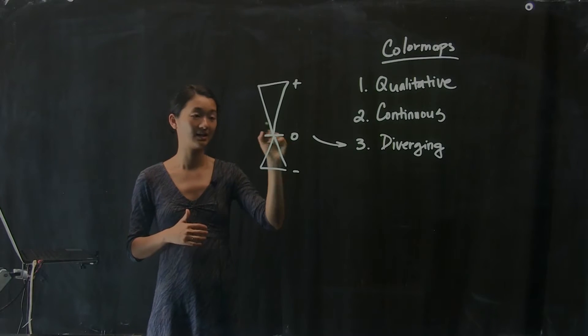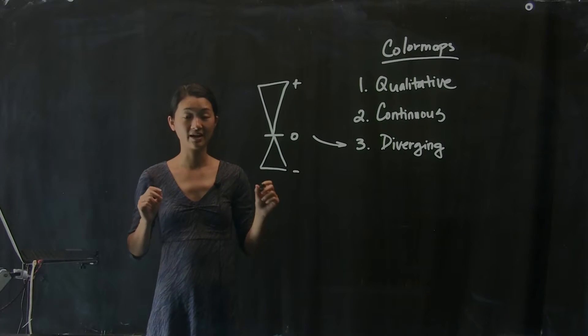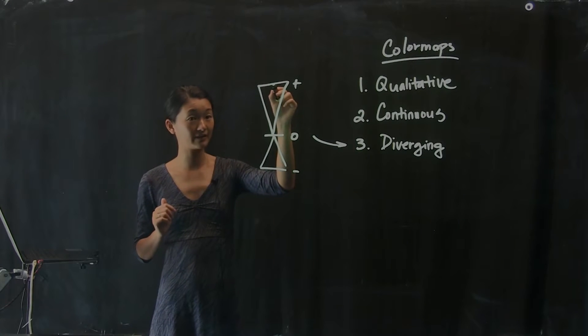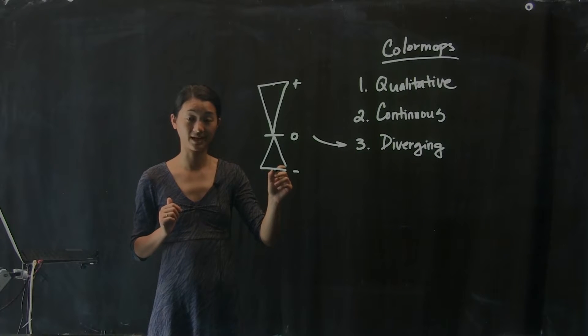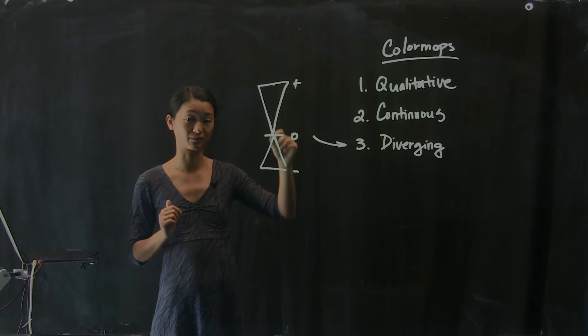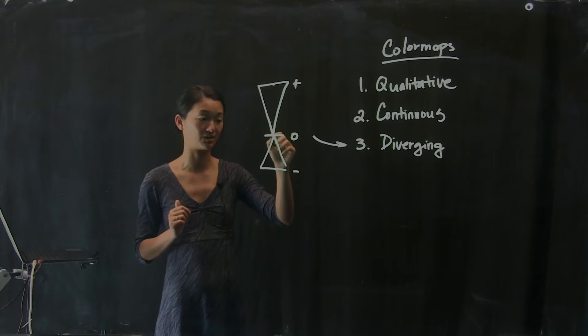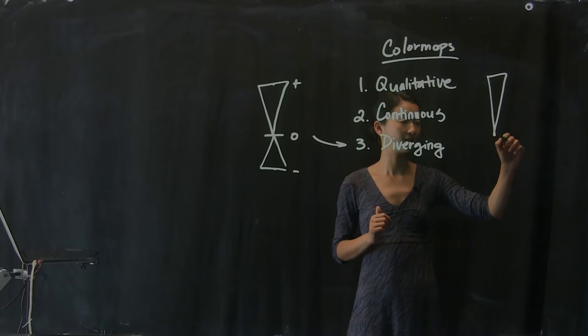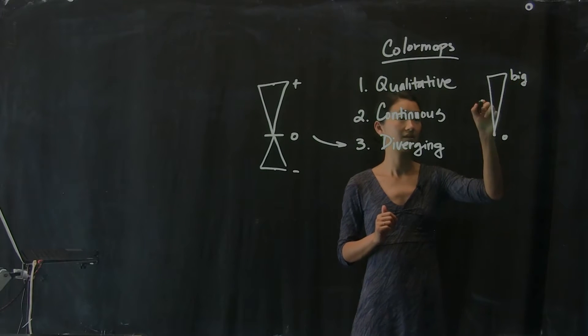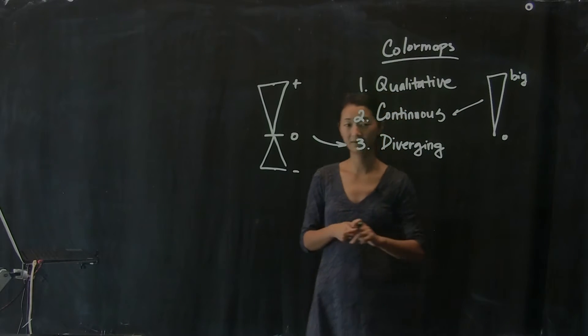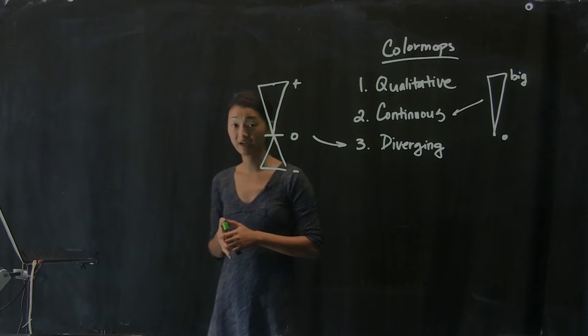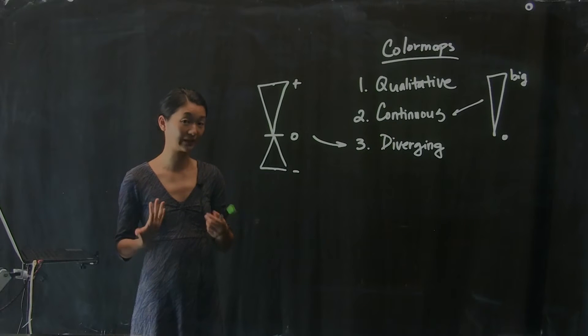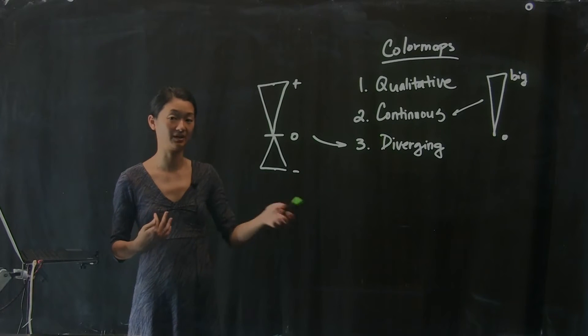That is when we use a divergent data set, where we assign the middle value, the zero value, a relatively neutral color that does not stand out, but we want the positive values to stand out relative to the negative values, and we want there to be a smooth gradation between zero and positive and zero to negative. The continuous, in contrast, looks something more like this, where this is zero and this is big. So these are different kinds of color maps that you can use, and it really impacts the visual flavor of your figure depending on which one you choose.